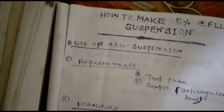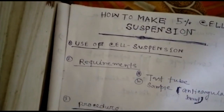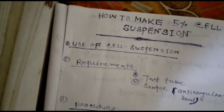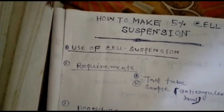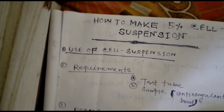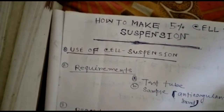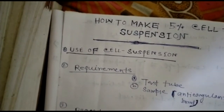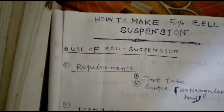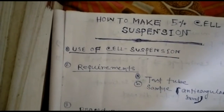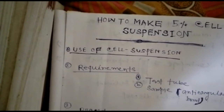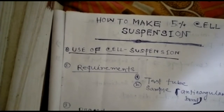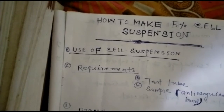Hello, welcome to my channel Sadhud Biology. I am Sadhud Chek. In this lecture, I want to discuss how to make a five percent cell suspension. The uses of cell suspension include blood grouping, reverse typing, forward grouping, and immunohematology tests such as cross-matching. Cell suspension is used in all of these procedures.